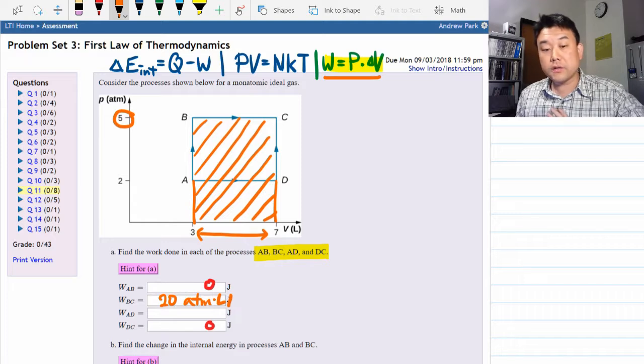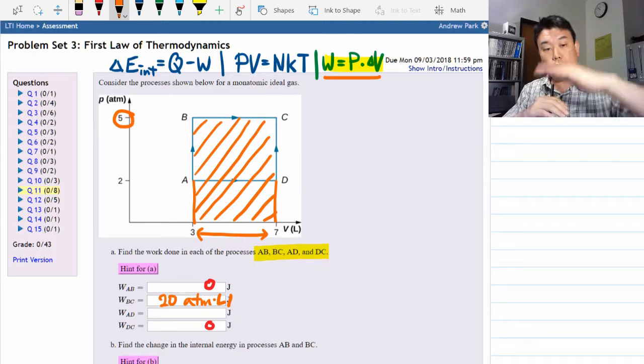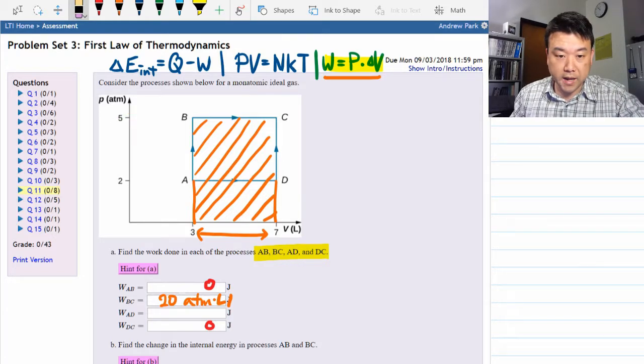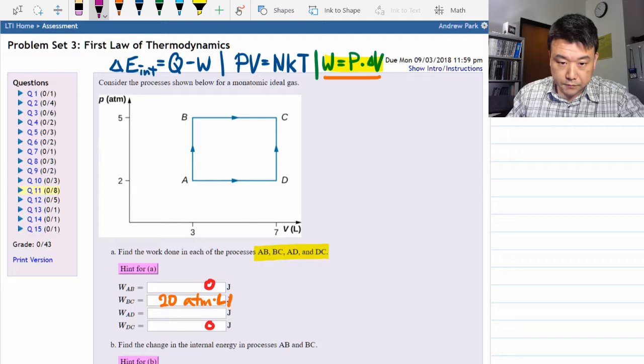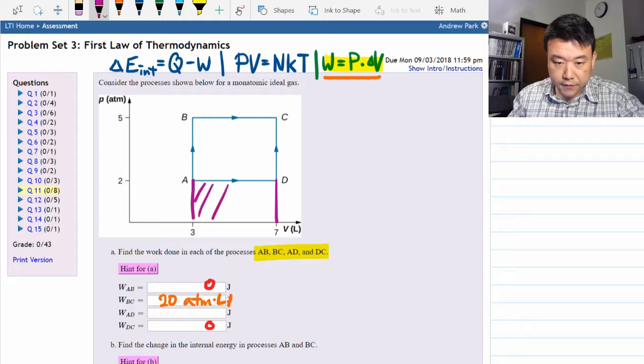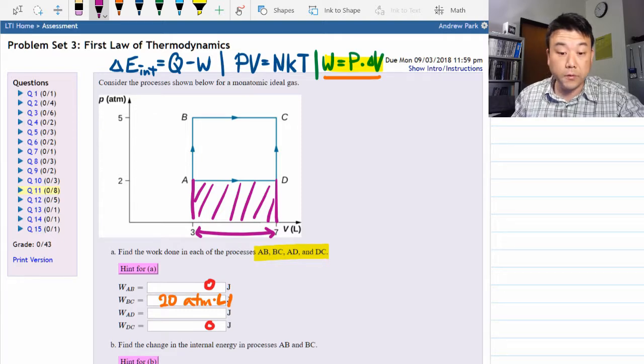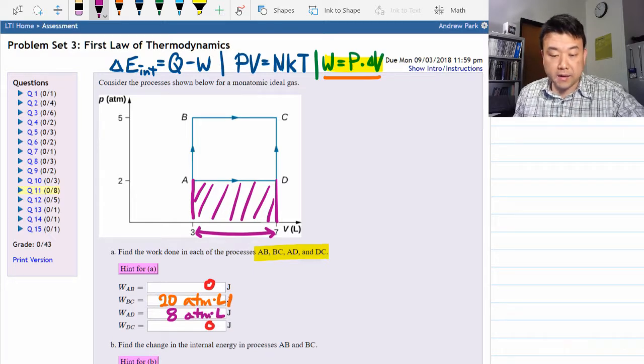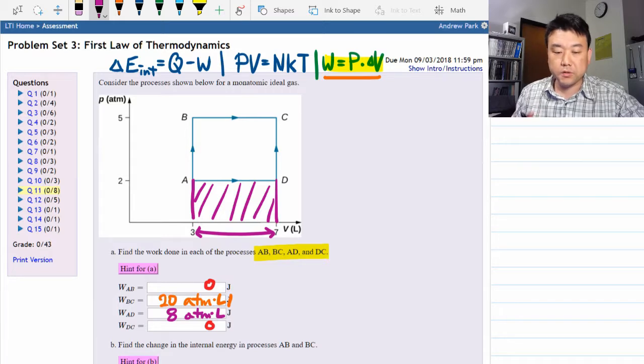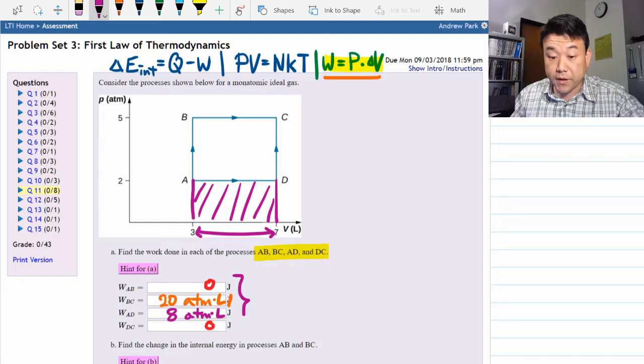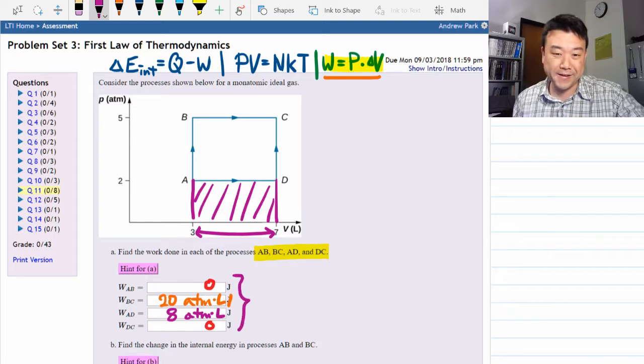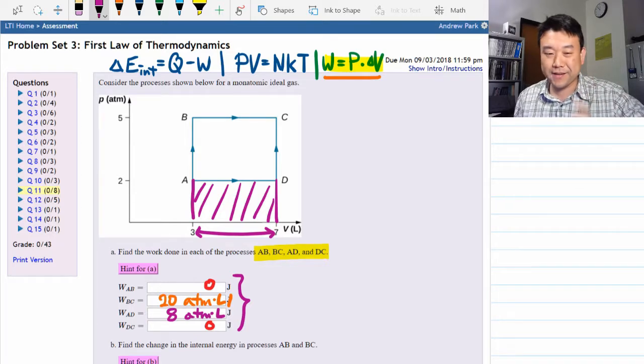The work done in the process AD is very similar except it's at lower pressure. So let me sketch that area under that curve. So that's from three to seven liters under two atmospheres. The volume difference is the same, four liters. So it's two atmospheres times four liters or eight atmosphere liter. That's it. And part of the tedious problem solving here is we want to save all this work. We're going to need them all eventually later. So let's not delete any of it and keep it on the page so that we can use it later.